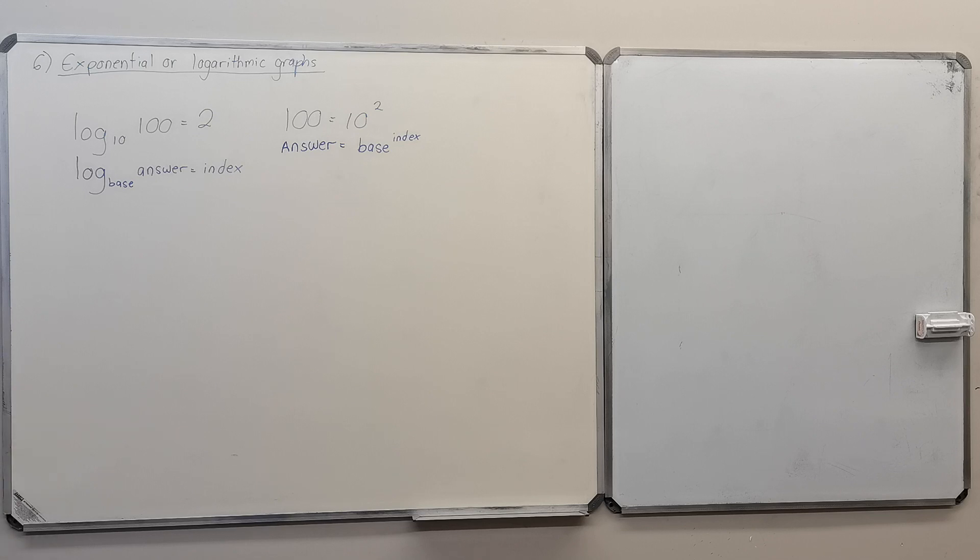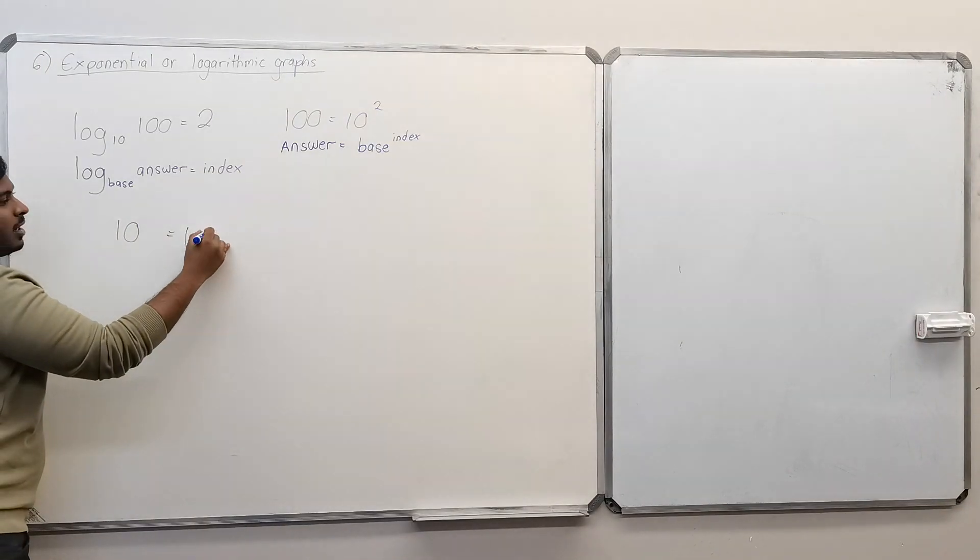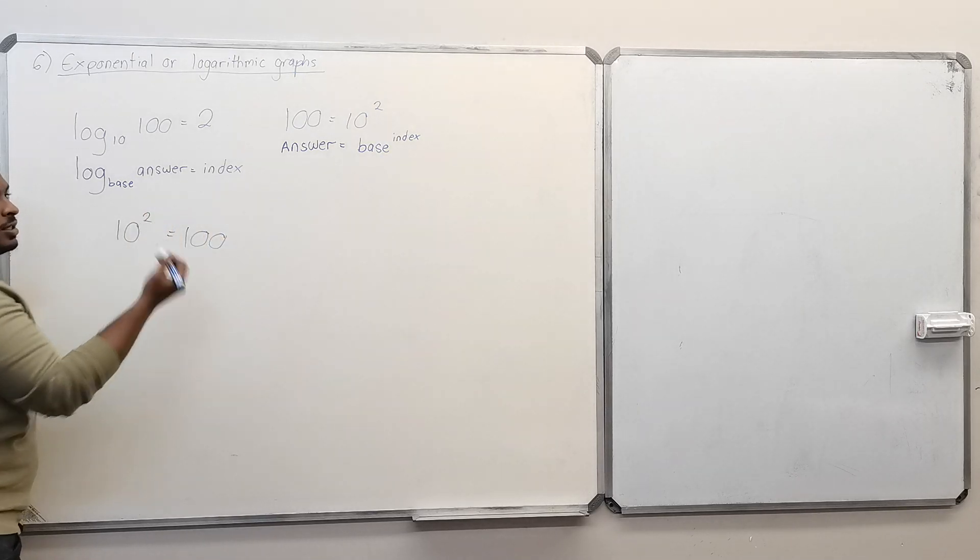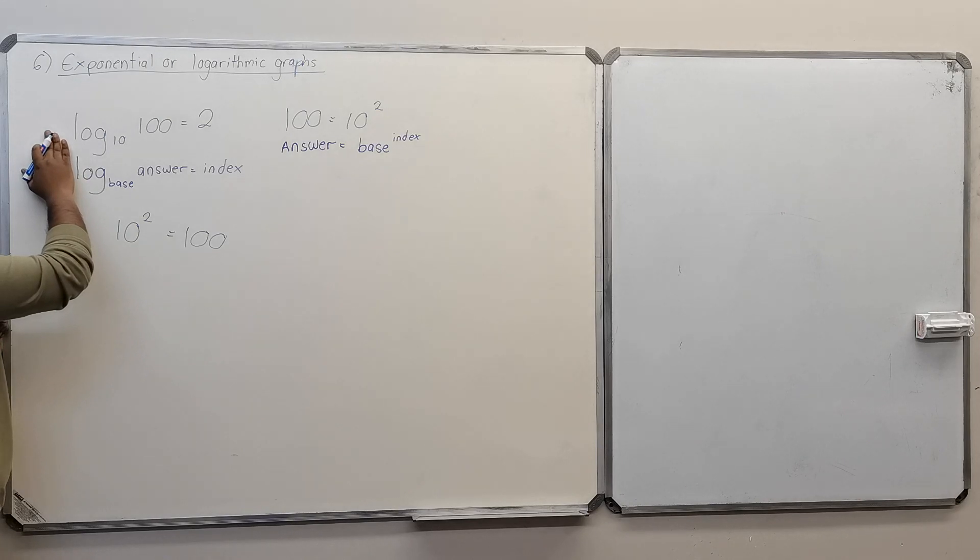As long as you remember each thing over there when you're applying it, you will not have a problem. Your base will be 10, your answer would be 100, and it would be to the index 2. This would be the exponent form, this would be the logarithm form.